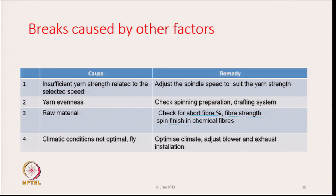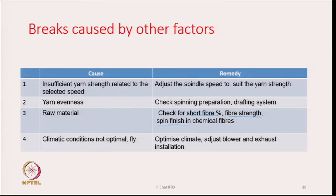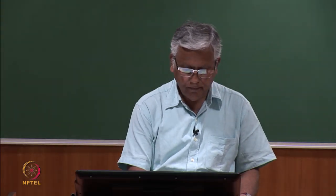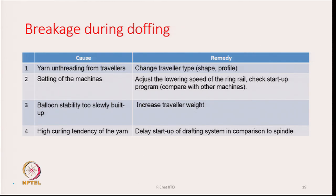Climatic conditions not optimal or too much fly: optimize climatic conditions — relative humidity and temperature need to be properly set. We must ensure that relative humidity is proper throughout the shed, and adjust the blower and exhaust installation so that it is not too humid nor too dry. Breakage during doffing — yarn unthreading from the travellers: change traveller type with a different shape and profile. Setting of the machines: adjust the lowering speed of the ring rail and check the startup program compared with other machines.